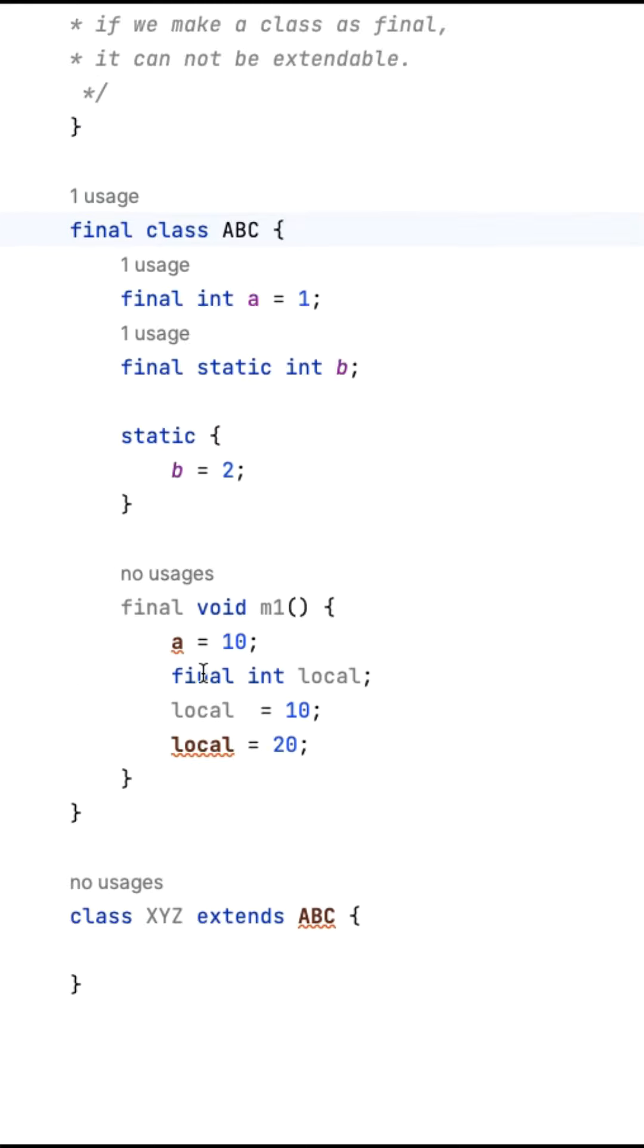Finally, the final keyword can also be used for local variables. If you create a local variable and set local variable equal to 10, you cannot assign it a second time because it is a final variable. You cannot update the value once it has been assigned.